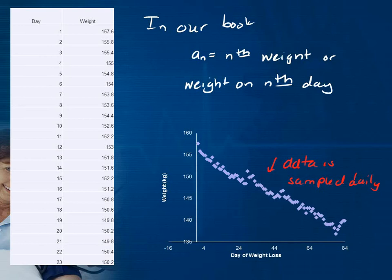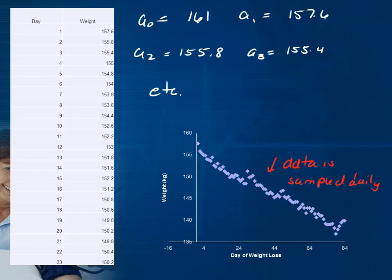In our book, they use the symbol a_n, which in this example means the nth weight on the nth day. So a_5, a_13, or a_0 would be their beginning weight — 161 kilograms, not pounds. a_1 would be 157.6 kilograms, a_2 would be 155.8 kilograms. They stepped on the scale every day, so there's a point for every day of weight loss. a_13 for example would be 151.